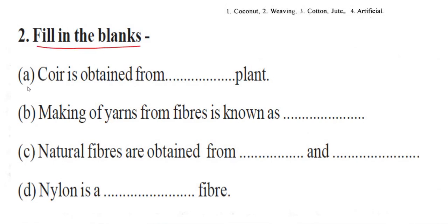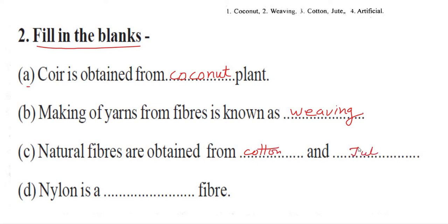Fill in the blanks. First: The fiber obtained from the plant of coconut is coconut fiber. Second: Making of yarn from fiber is known as spinning. Third: Natural fibers are obtained from cotton and jute. Fourth: Nylon is an artificial fiber.